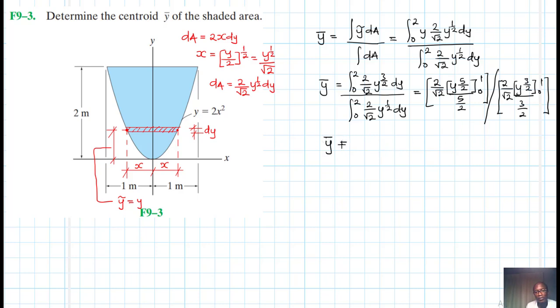Y-bar therefore just becomes equal to, so we are dividing, the 2 over root of 2 cancels out, and we just remain with, this is to the power 2, we are evaluating this from 0 to 2.